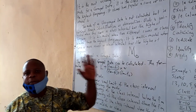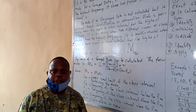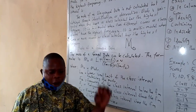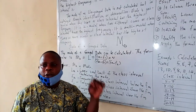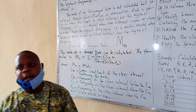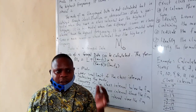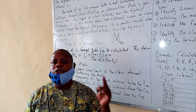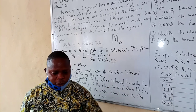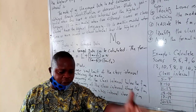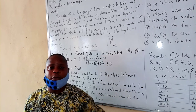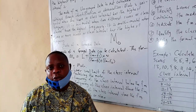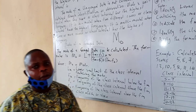The mode of an ungrouped data cannot be calculated — it is identified or observed. The mode of an ungrouped data can be obtained through identification or through observation. You can just see, especially from grouped data, the score with the highest frequency or the most occurring score.